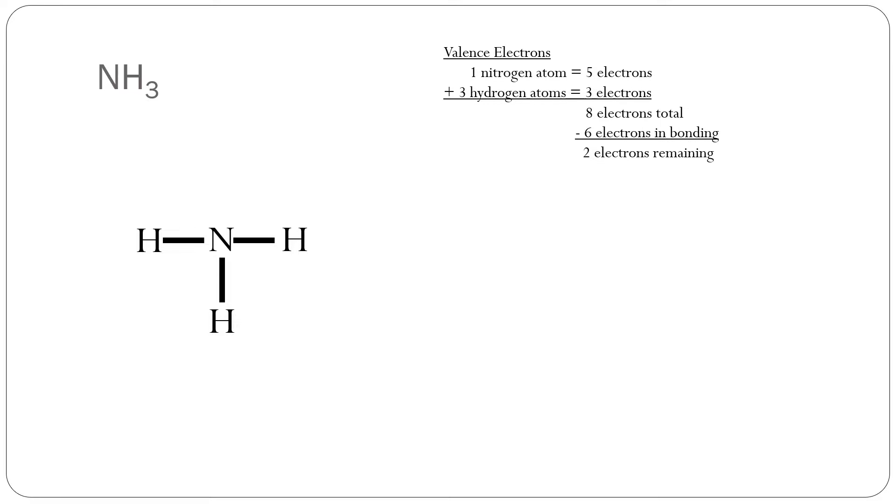Notice in the center, nitrogen only is sharing three pairs of electrons. Nitrogen wants to satisfy the octet rule. It wants to have two more electrons around it. Naturally, these two electrons remaining will go on the nitrogen. We use the two electrons, so we'll subtract two from our total, which leaves us with zero electrons remaining.